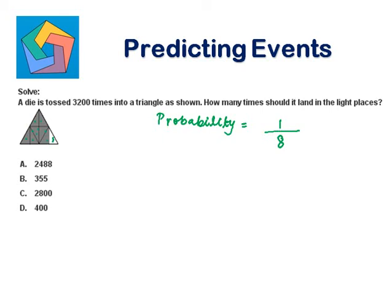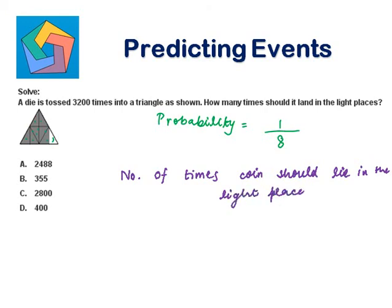Now the number of times it should lie in the light places. Number of times the coin should lie in the light places equals 1 eighth times 3200, that's equal to 400, which is the answer in the D part. We can highlight it. D, 400.